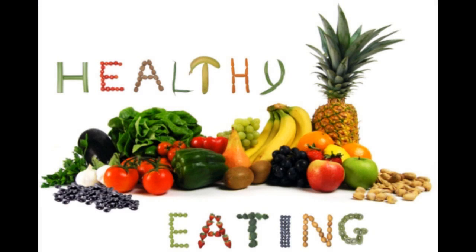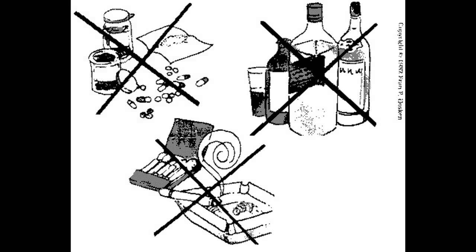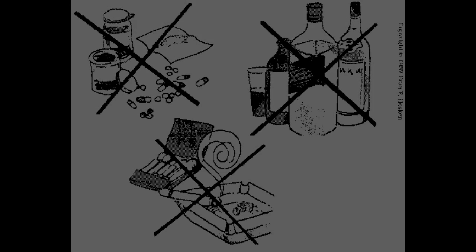There are some ways in which you can prevent the development of brain tumors or cancer in general, such as avoiding exposure to certain environmental agents, eating a healthy diet, visiting your doctor regularly, and limiting your consumption of alcohol and cigarettes.